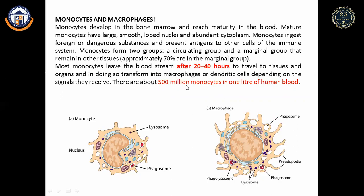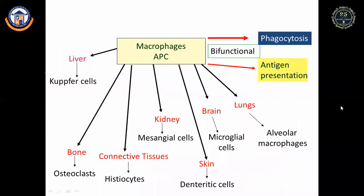Types of macrophages by tissue: in liver, Kupffer cells; in bone, osteoclasts; in connective tissue, histiocytes; in kidney, mesangial cells; in skin, dendritic cells; in brain, microglial cells; in lungs, alveolar macrophages. Macrophages have a bifunctional role — antigen presentation as well as phagocytosis. Remember these names as they may be asked in competitive exams.